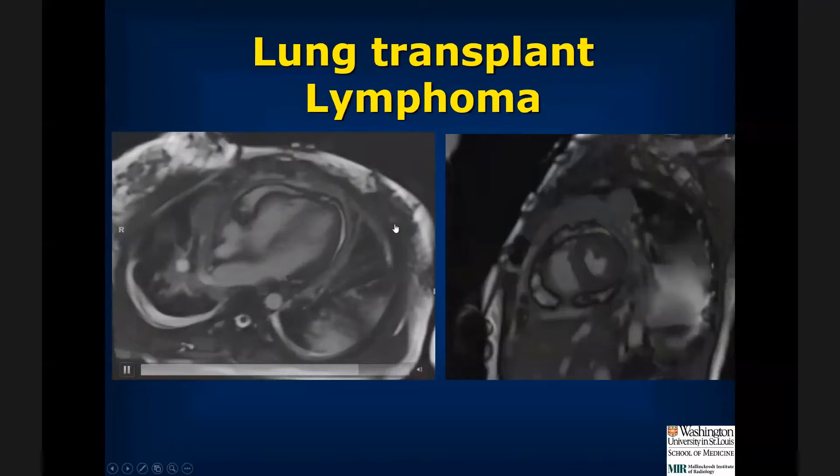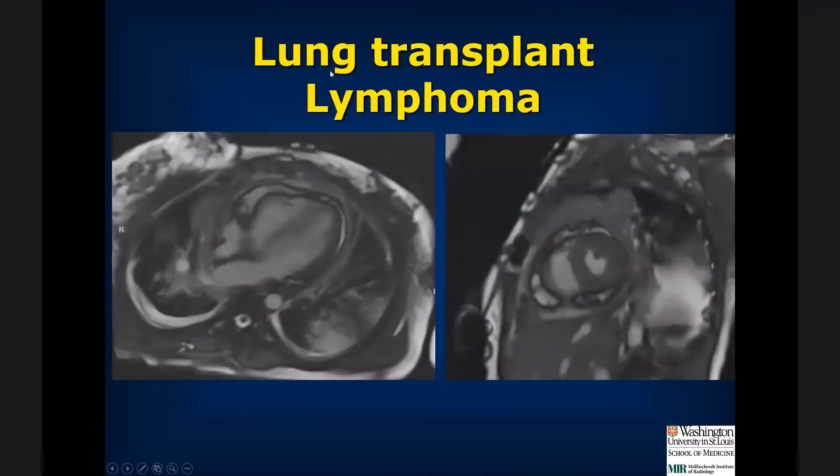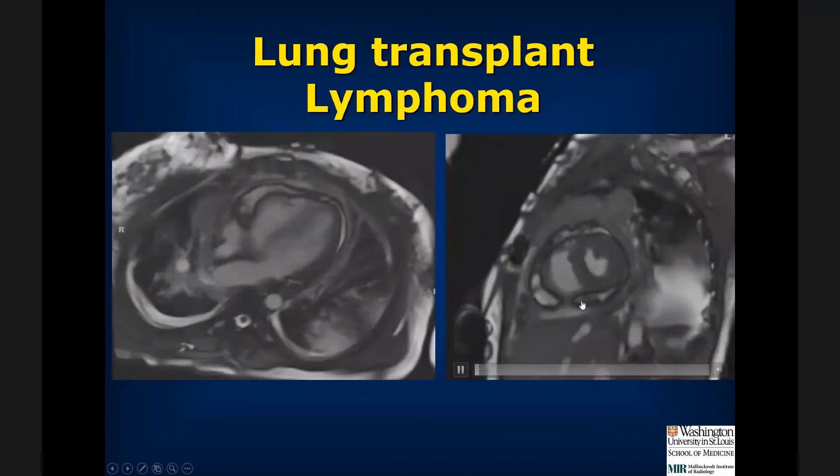In this last patient, who had lung transplantation and developed lymphoproliferative disease progressing to lymphoma, there is a lymphomatous mass anterior to the pericardium with pericardial thickening and a small amount of pericardial fluid. Looking closely, there is evidence of septal bounce.